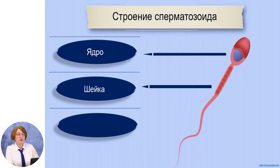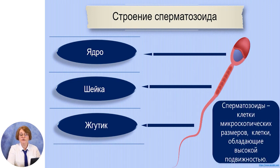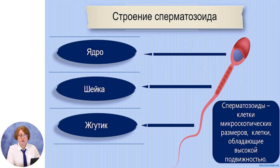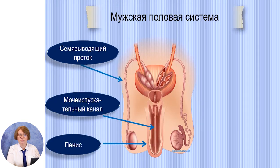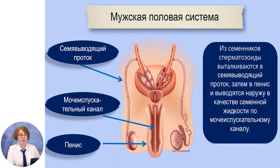Сперматозоид – это мужская половая гамета, или мужская половая клетка. Это клетки микроскопических размеров, обладающие высокой подвижностью. Сперматозоид состоит из трёх частей: в головке содержится ядро клетки, утолщённая часть – шейка, и жгутик, с помощью которого сперматозоиды передвигаются. Из семенников сперматозоиды выталкиваются в семявыводящий проток, затем попадают в пенис и выводятся наружу в качестве семенной жидкости по мочеиспускательному каналу.